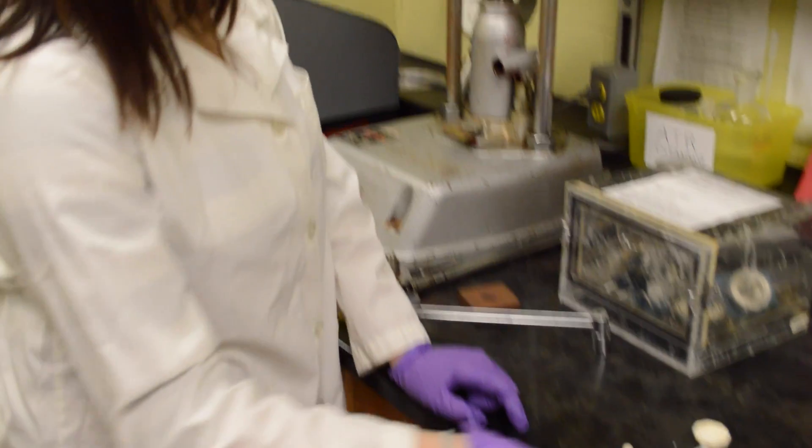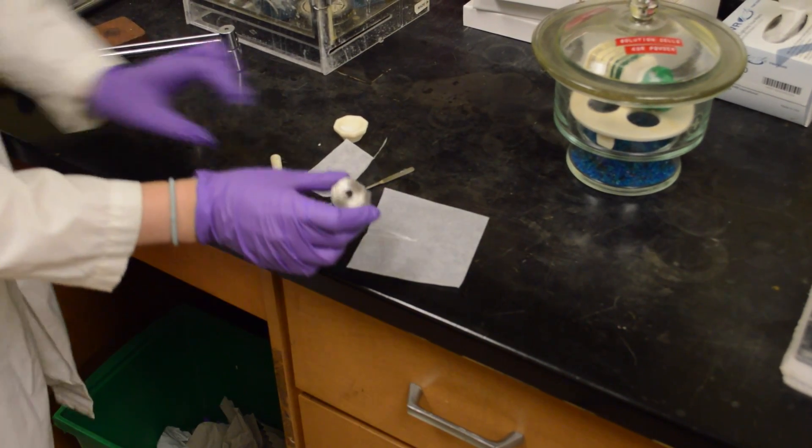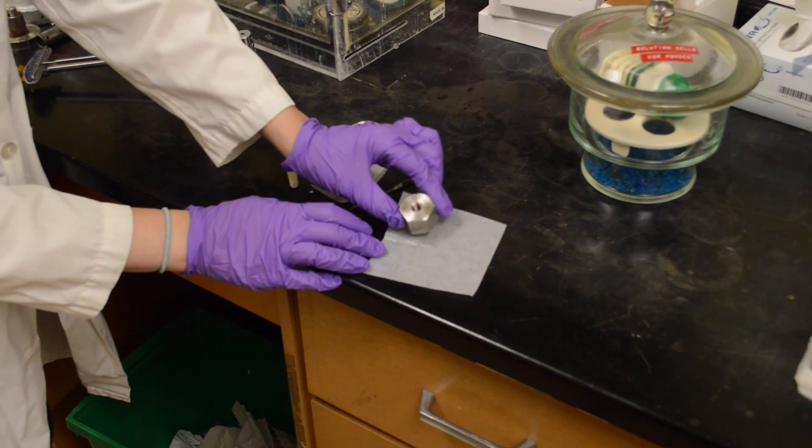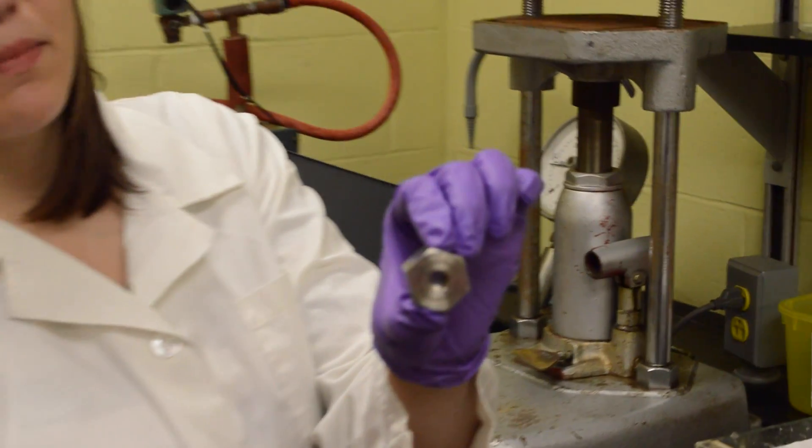Then you want to tap out any excess KBR. Just give it a little light tap on both sides. As you can see, there's a little plate formed on the inside of the barrel.